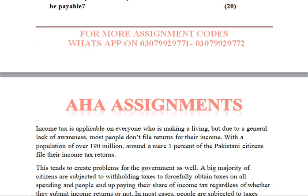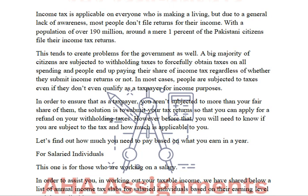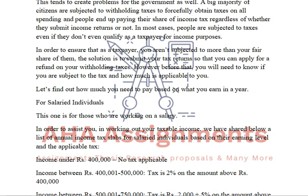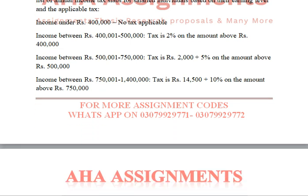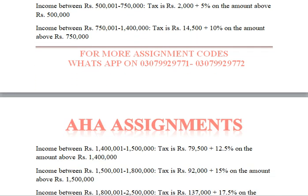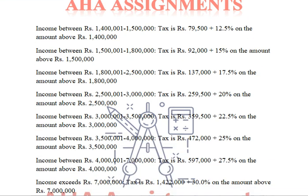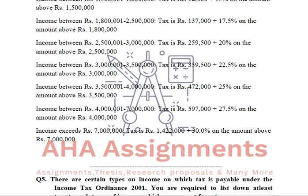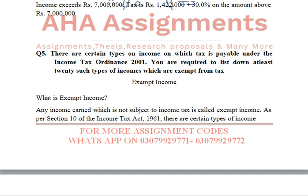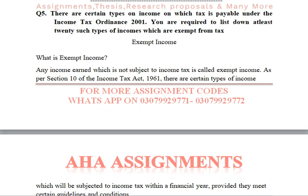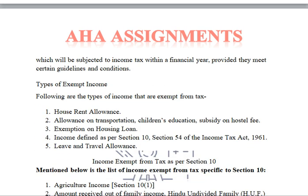Moving to question number 4, you have to suppose that you are running a small business organization, and from that you handle your tax. The complete description is given — how much income you have and how much tax you have to pay. In this question you also have to define exempt income, and what you have to do. This is your full assignment based on Tax Ordinance 2001.